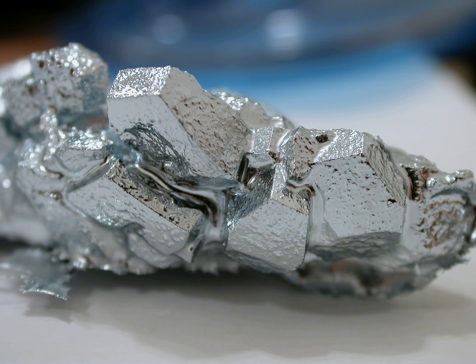Isotopes: Gallium has 31 known isotopes, ranging in mass number from 56 to 86. Only two isotopes are stable and occur naturally, gallium-69 and gallium-71. Gallium-69 is more abundant, it makes up about 60.1% of natural gallium, while gallium-71 makes up the remaining 39.9%. All the other isotopes are radioactive.